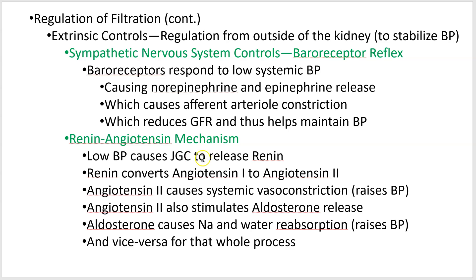If blood pressure is high, the reverse applies: the juxtaglomerular complex doesn't release renin. No renin means no angiotensin 2; no angiotensin 2 means no vasoconstriction and no aldosterone release. So the renin-angiotensin mechanism works both ways — low blood pressure activates it, high blood pressure does not.